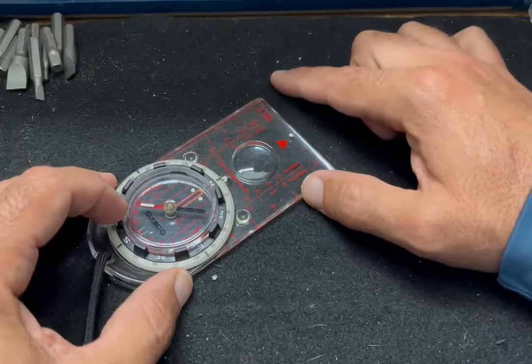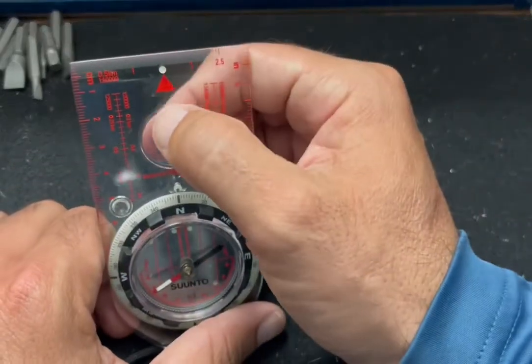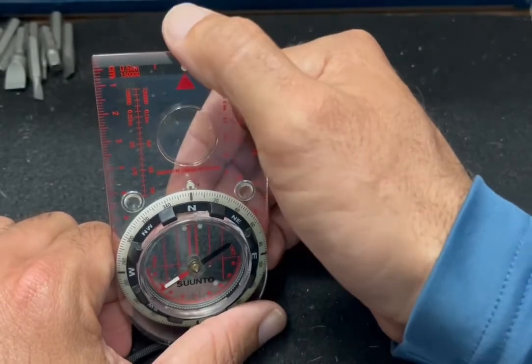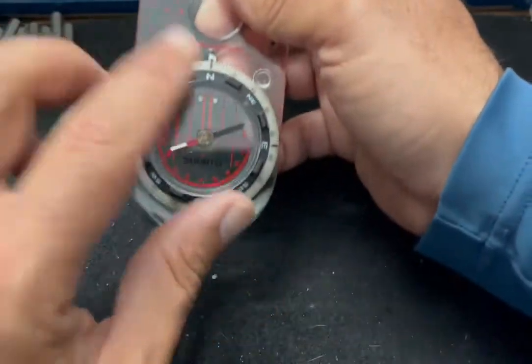Aside from that, you have an orienting arrow which is right over here. This is always going to be the direction you're going to use to go. This coincides with this—we're going to touch on this in a minute.